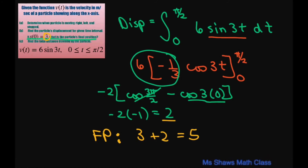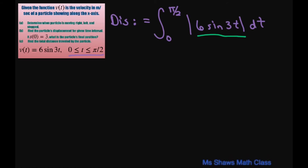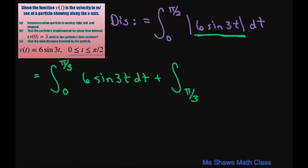To find the total distance, you write it as the integral from zero to pi divided by 2 of the absolute value of 6 sine of 3t dt. We split this up because of the absolute value: where it's going right, that's positive, so we integrate 6 sine of 3t dt from 0 to pi divided by 3. Where it was negative, we add the integral from pi divided by 3 to pi divided by 2 of negative 6 sine of 3t dt.